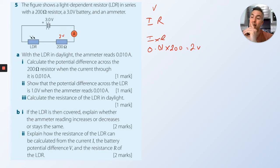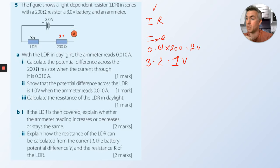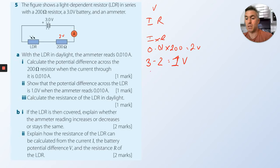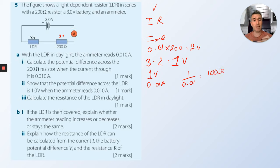We've got 2 volts across the 200 ohm resistor. The potential difference across the LDR is 1 volt, because if you've got 3 volts from the battery and 2 volts go into the 200 ohm resistor, there's only 1 volt left for the LDR. The resistance of the LDR in daylight: 1 divided by 0.01 equals 100 ohms.